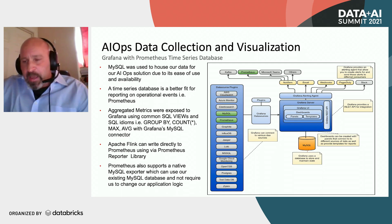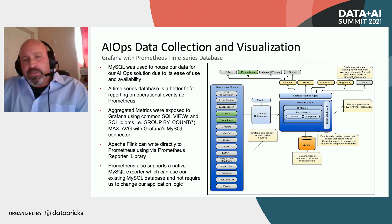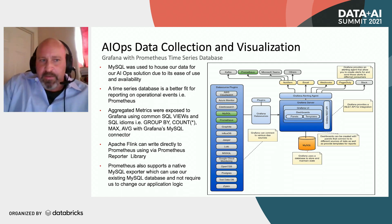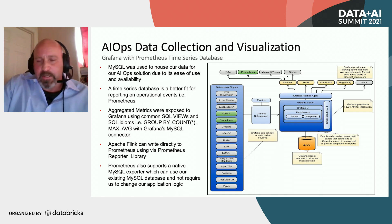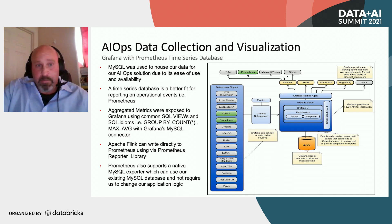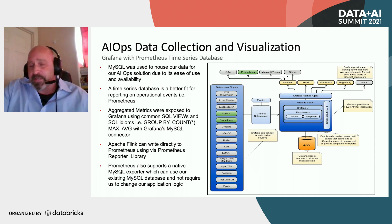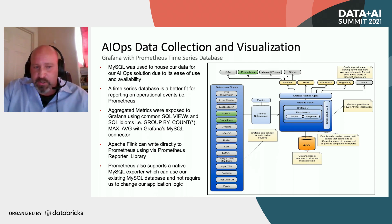We use MySQL and Grafana, however that is just a simple approach. In a production environment you'd probably use something like Prometheus, a time series database. We used MySQL to house our data just due to its ease of use and availability. A time series database is probably a better fit for reporting on operational events, especially when they come in real time. The aggregated metrics — SQL views, group by, count, max — can also be used in a time series database. Apache Flink can write directly to Prometheus using the Prometheus reporter library, and Prometheus has a native MySQL exporter that can use the existing MySQL database without requiring any application logic changes, so we can simply export our data from MySQL to Prometheus.